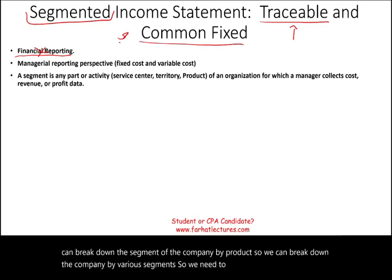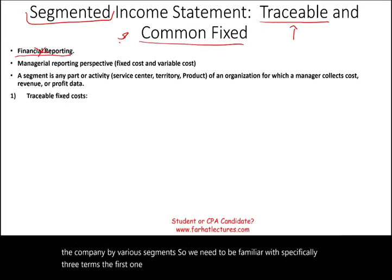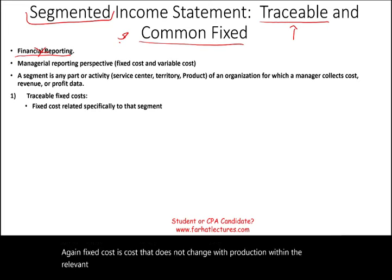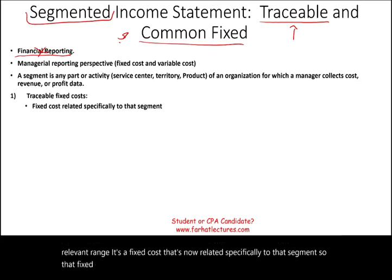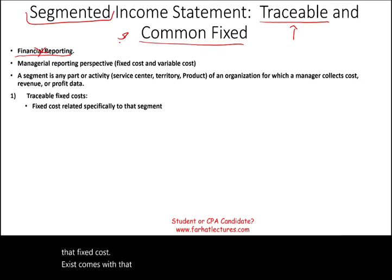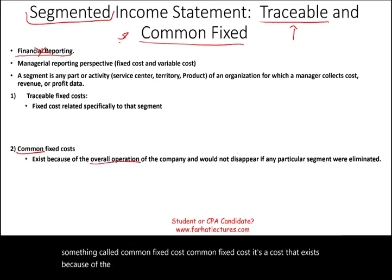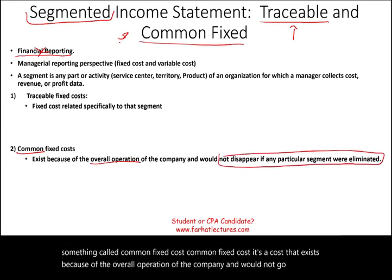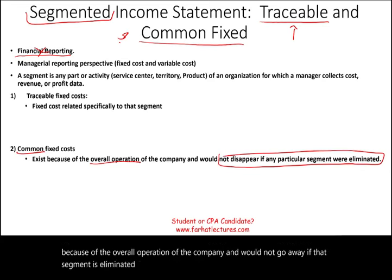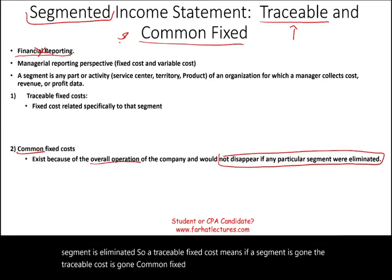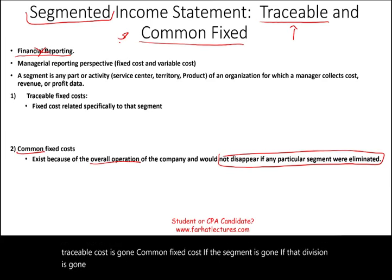We need to be familiar with three terms. The first is traceable fixed cost — a fixed cost that is specifically related to that segment. It exists because of that segment. In contrast, common fixed cost is a cost that exists because of the overall operation of the company and would not go away if that segment is eliminated. So if a segment is gone, the traceable cost is gone, but the common fixed cost remains.